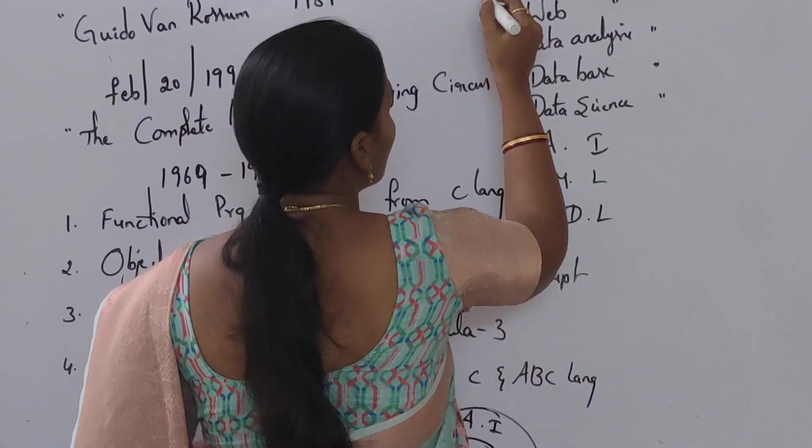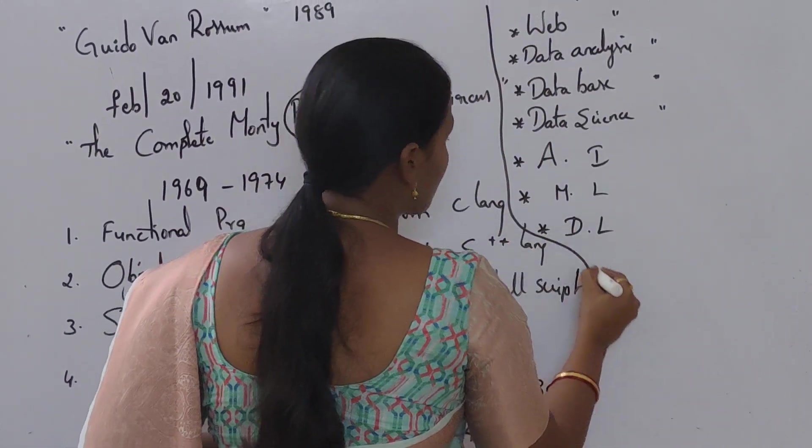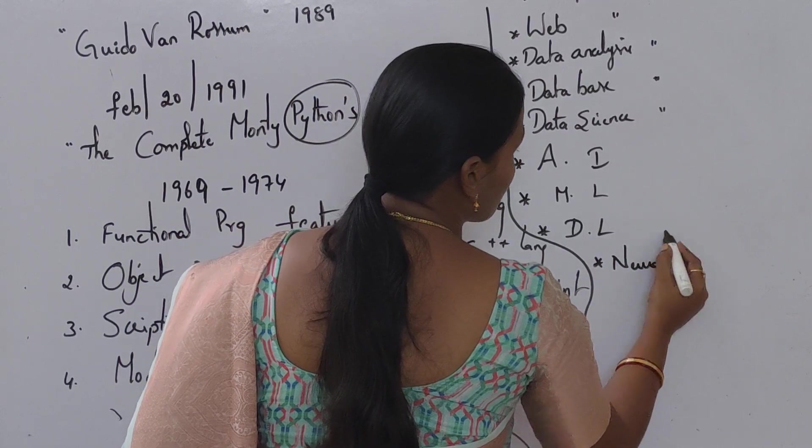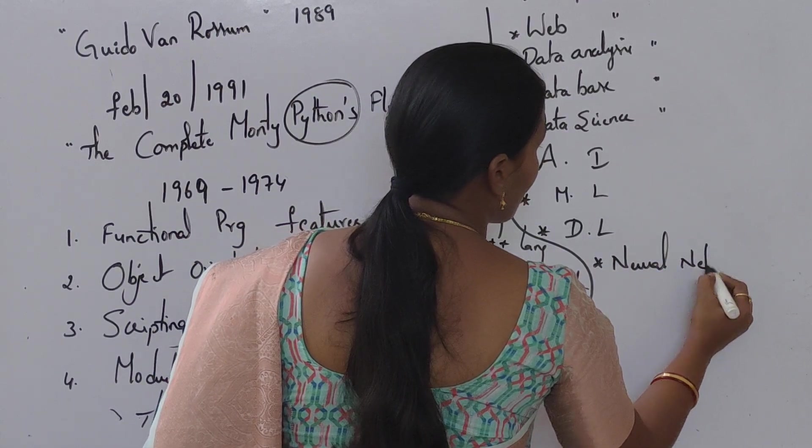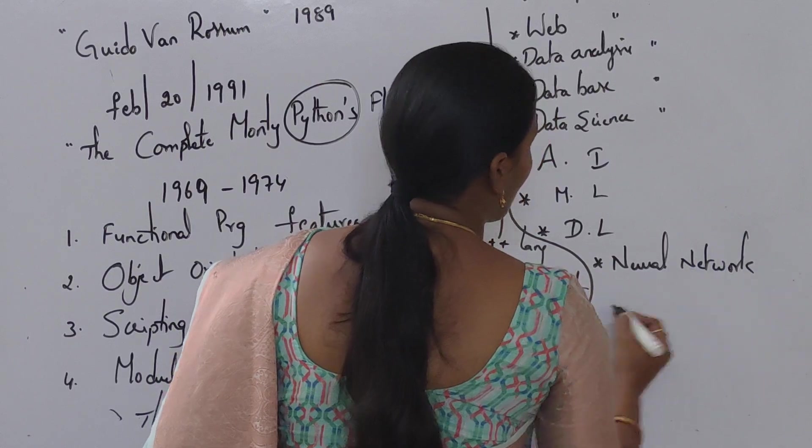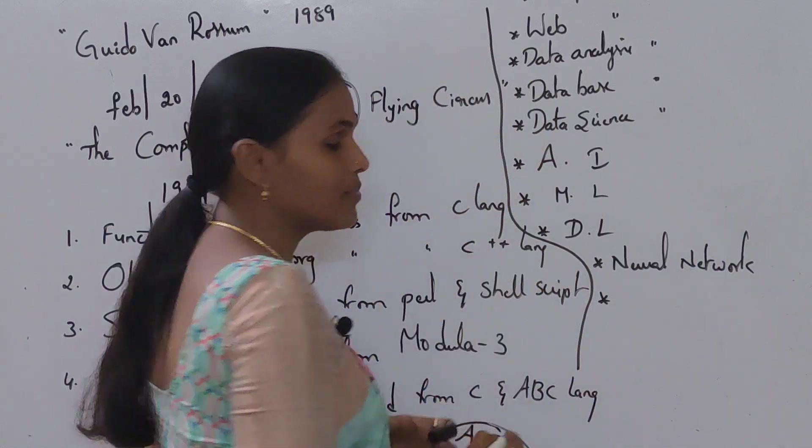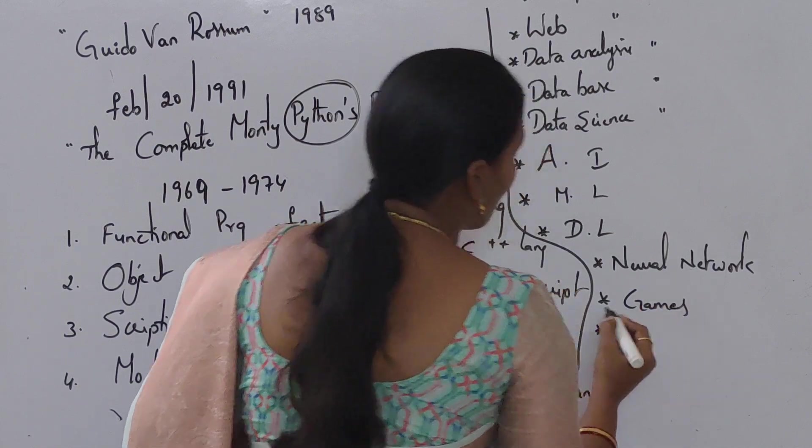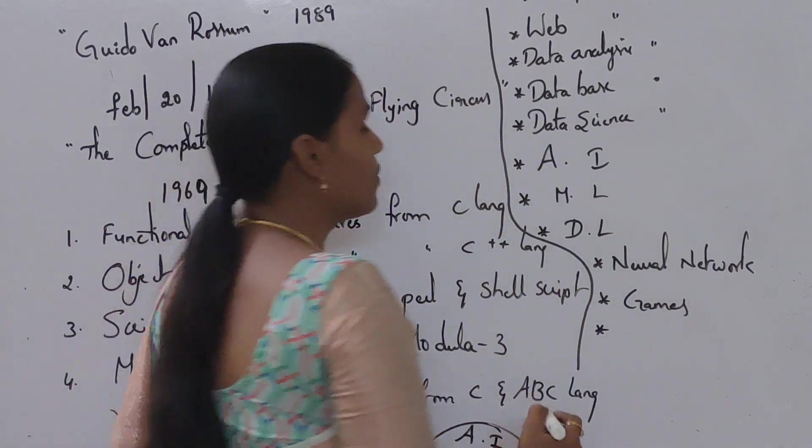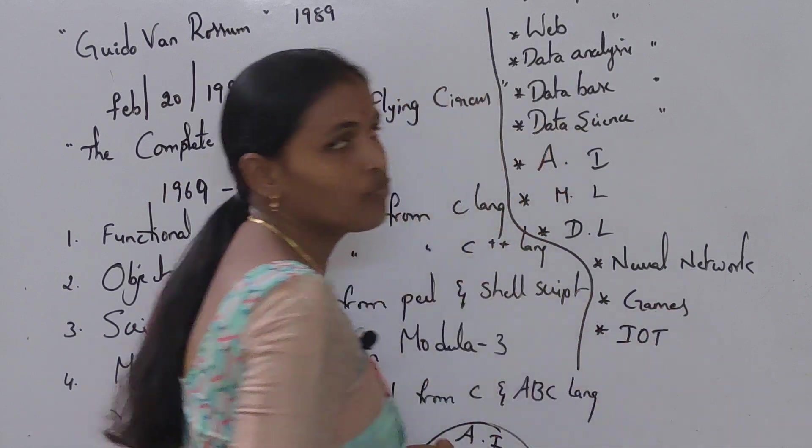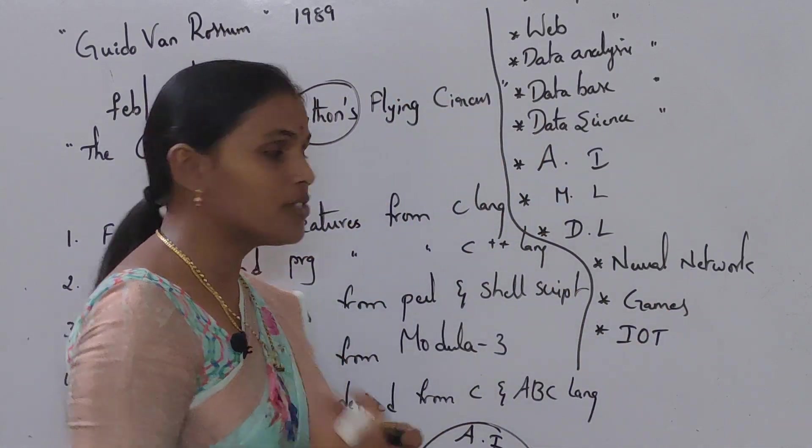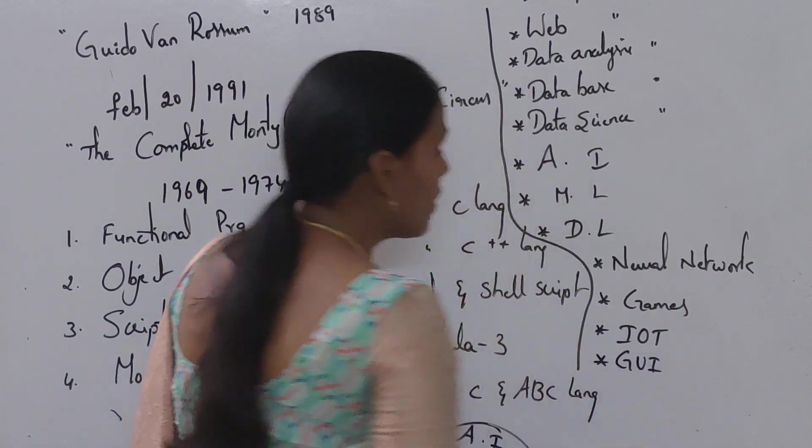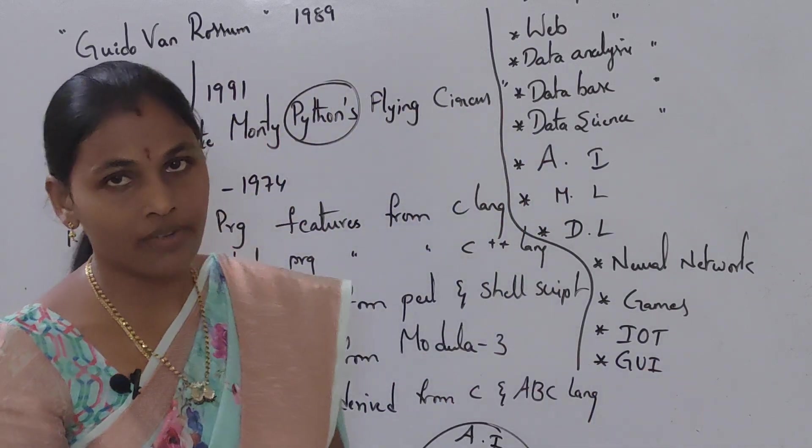And next one is neural networks. Neural network. And next one is games. And next one is IoT. IoT means Internet of Things. Next one is GUI. GUI means graphical user interface.